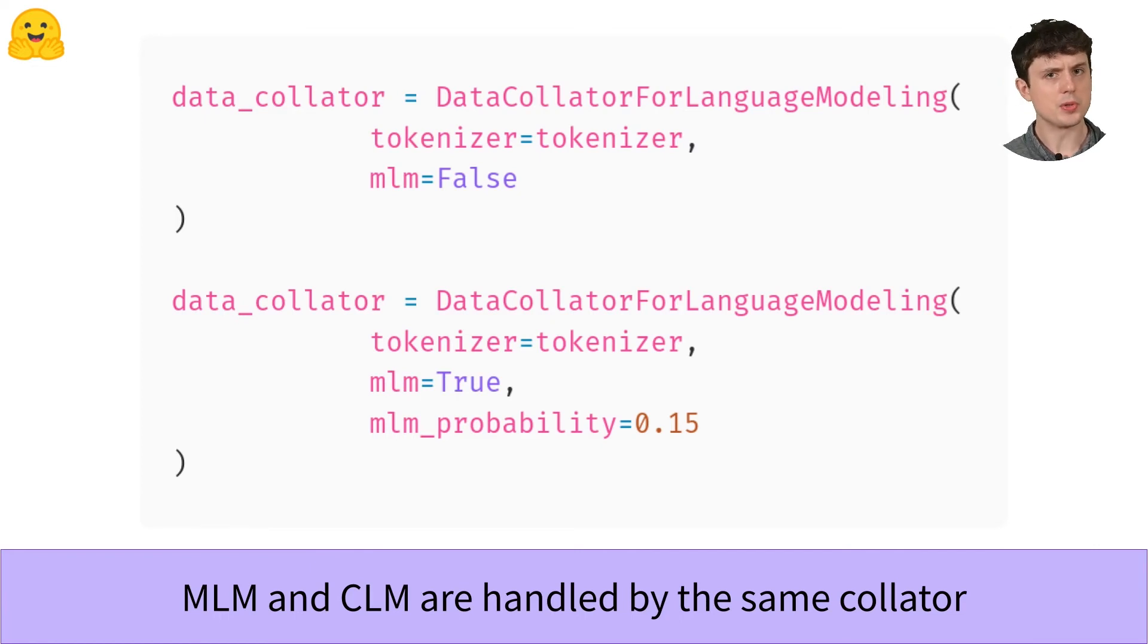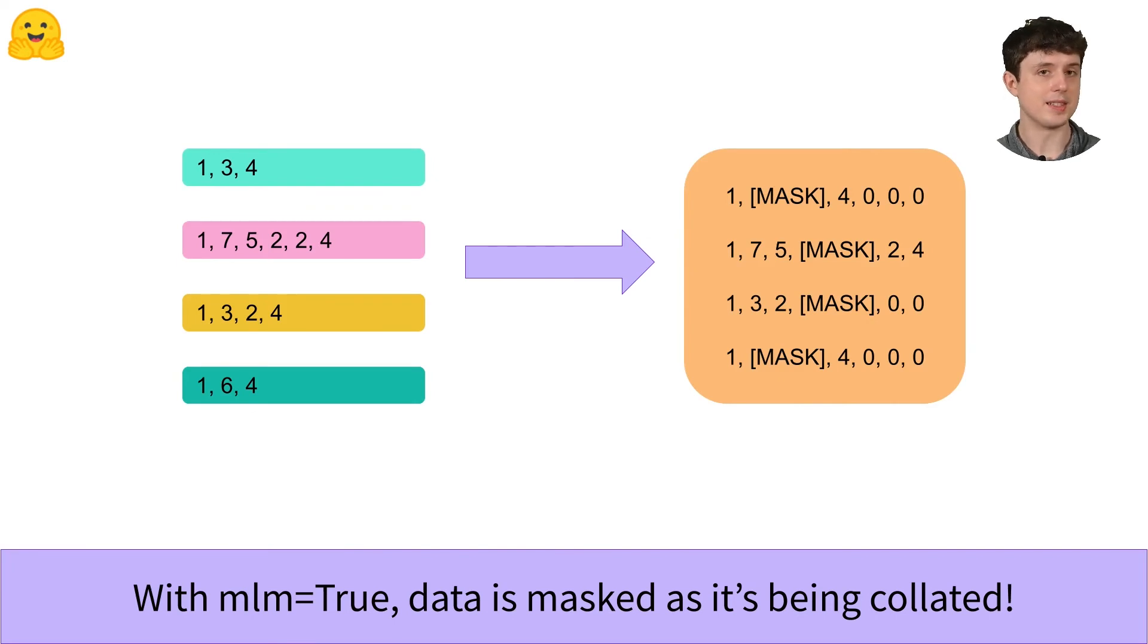When you set mlm to true though you get a very different behavior that's different from any other data collator and that's because setting mlm to true means masked language modeling and that means the inputs need to be masked. So what does that look like?